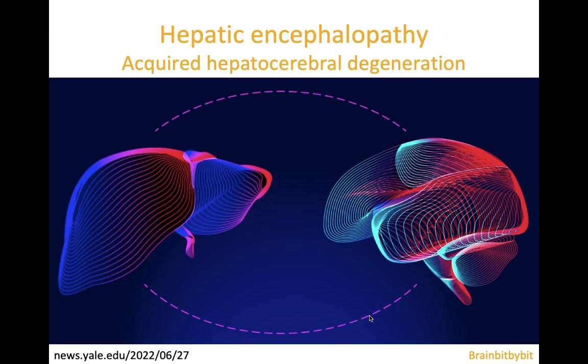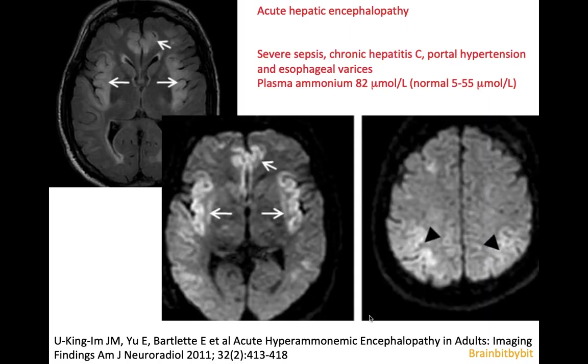We all know that the liver detoxifies our blood, and in liver failure there is accumulation of toxins, which is not good for the brain. The imaging findings in acute hepatic encephalopathy are mainly located in the cortex on T2 FLAIR and diffusion-weighted images.